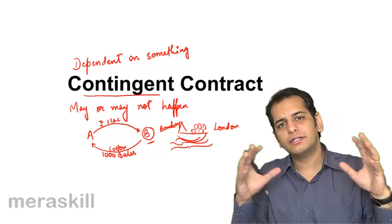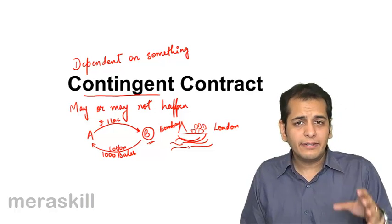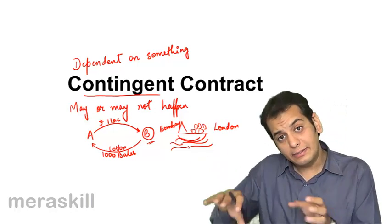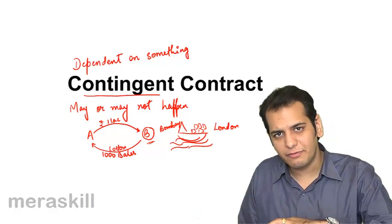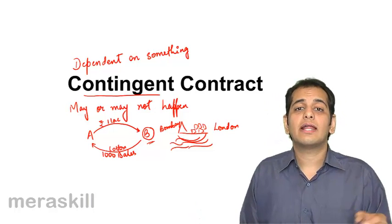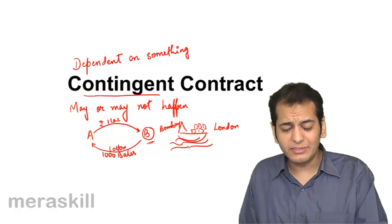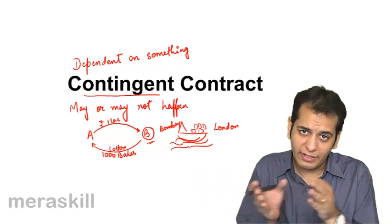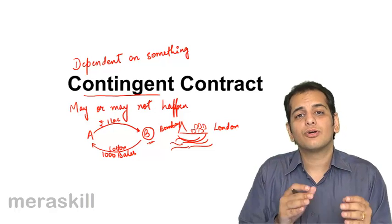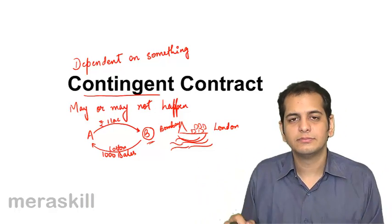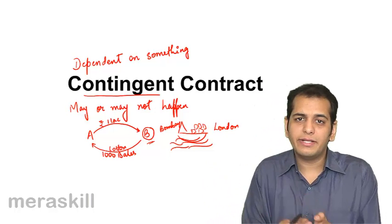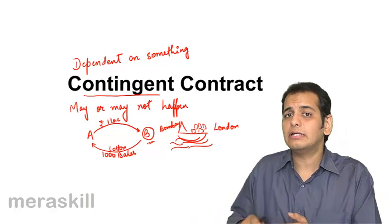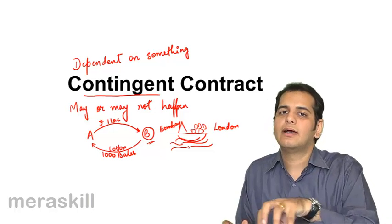So this is what a contingent contract normally is — it is dependent upon some event which may or may not happen. Depending upon the happening or non-happening of that event, this contract may or may not happen. In this example, the event was the reaching of the ship. If the ship reached — that is, if the event happened — the contract becomes valid. If the ship did not reach, the contract will not happen because the event did not happen. So this contract was based on the happening of the event.